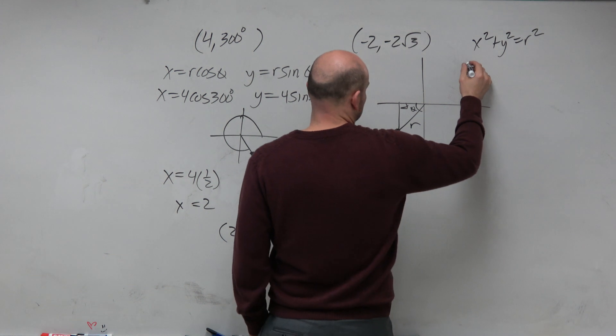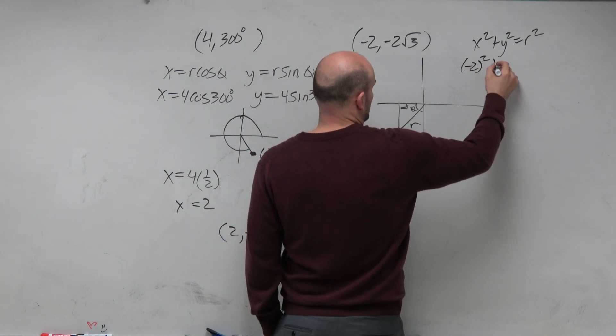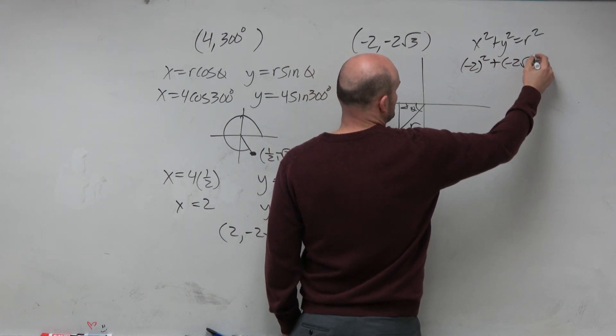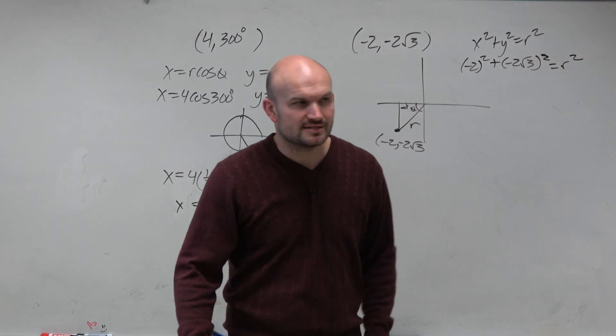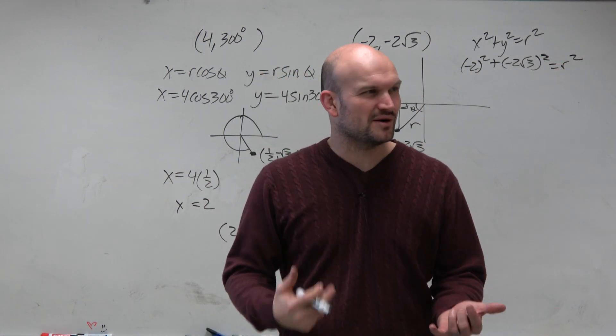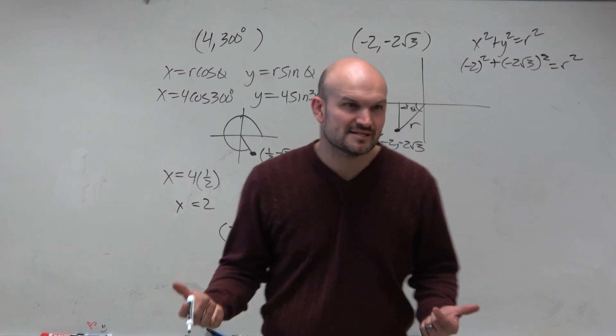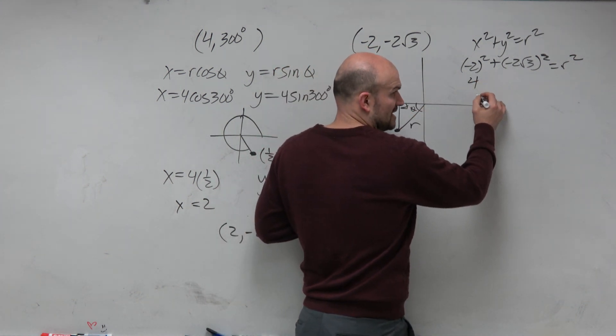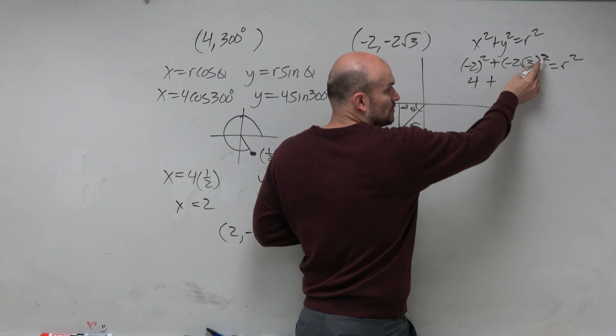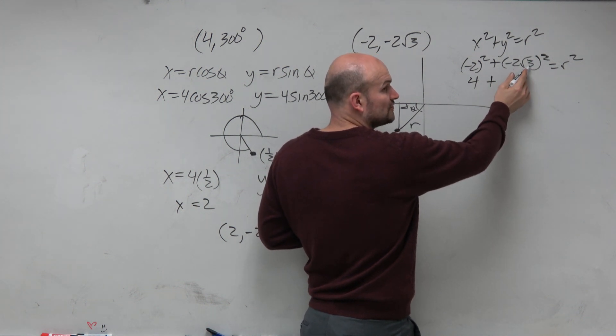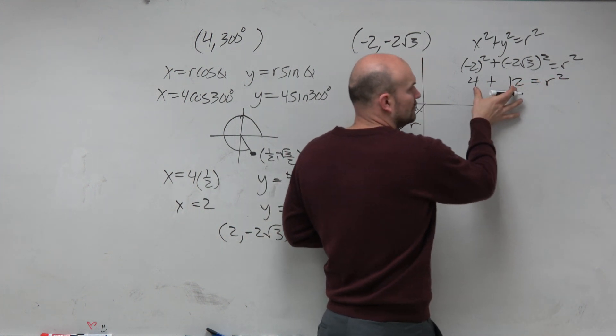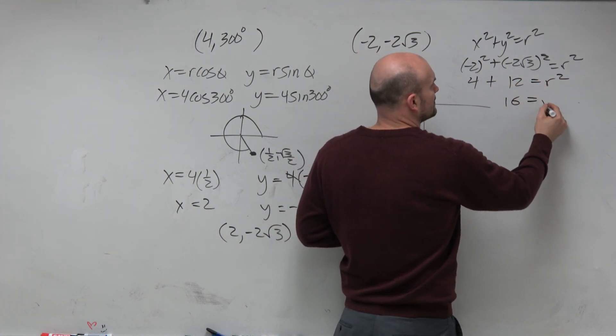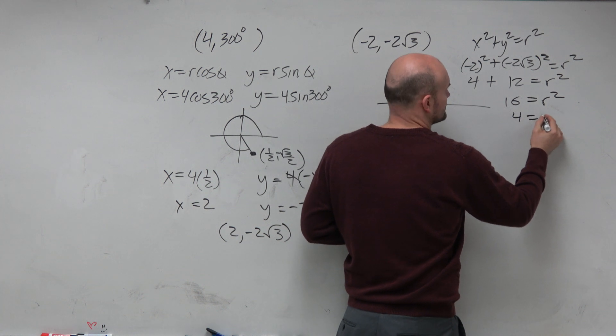So therefore, we can say negative 2 squared plus negative 2 squared of 3 squared. Now again, guys, you could plug in your calculator, take it out. But with all the parentheses and square roots, let's just try to do some mental math. Negative 2 squared is 4. That wasn't that bad. Negative 2 squared again is going to be 4. Square root of 3 squared is 3. 4 times 3 is 12. 4 plus 12 is 16 equals r squared, so r equals 4.